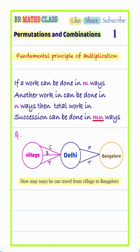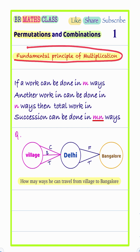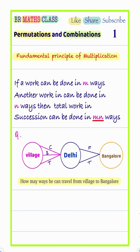This problem can be done very easily if you know the fundamental principle of multiplication. What is the fundamental principle of multiplication? If a work can be done in M ways, and another work can be done in N ways, then the total work can be done in M×N ways.